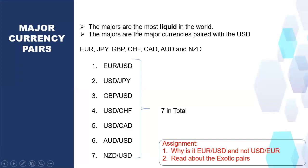The Majors are the most liquid in the world. Most liquid means they are the most traded — they have the most volatility and the highest transaction volume on a daily basis. People buy and sell them daily with high volume. That's what it means to be liquid.